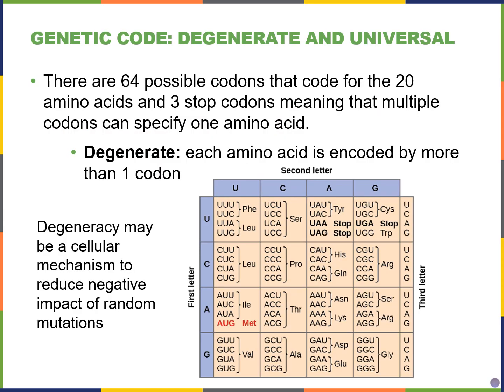Down here is a picture of the genetic code, which is really cool because it's degenerate. That means there are more codons than amino acids — each amino acid can be encoded by more than one codon. For proline, for example, there are four codons that encode that single amino acid. In this chart, we have 64 possible codons encoding the 20 different amino acids, and there are also three stop codons that tell us when to stop translation.